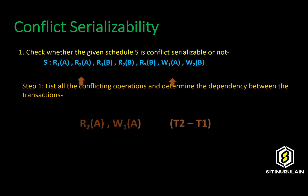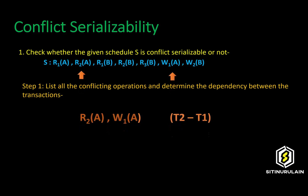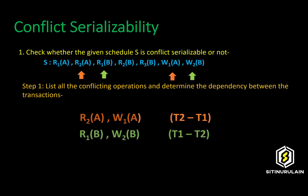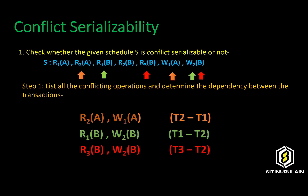The first operation is read item A for transaction 2 and write item A for transaction 1. The second operation is read item B for transaction 1 and write item B for transaction 2. The last operation is read item B for transaction 3 and write item B for transaction 2.